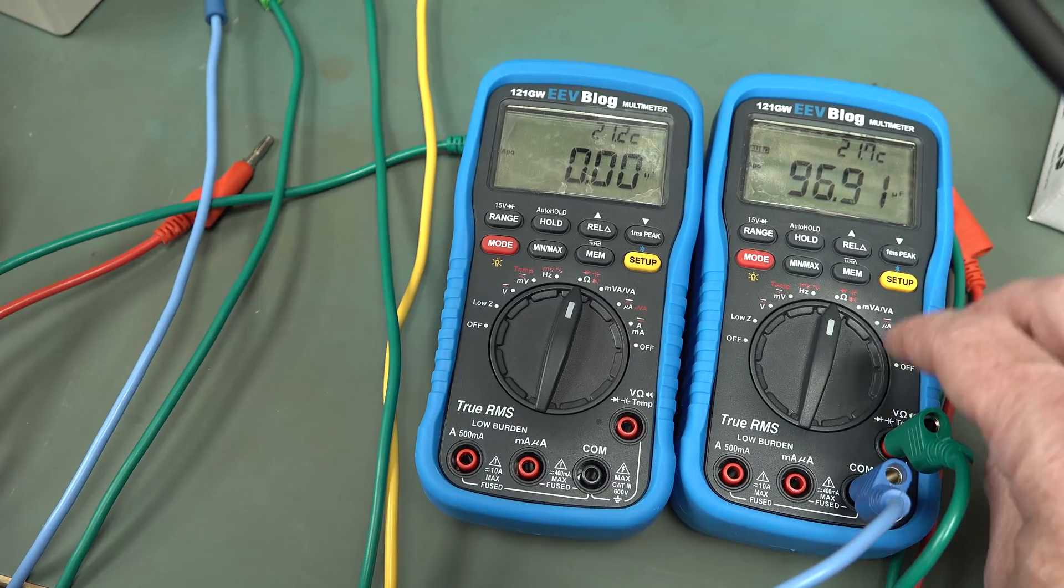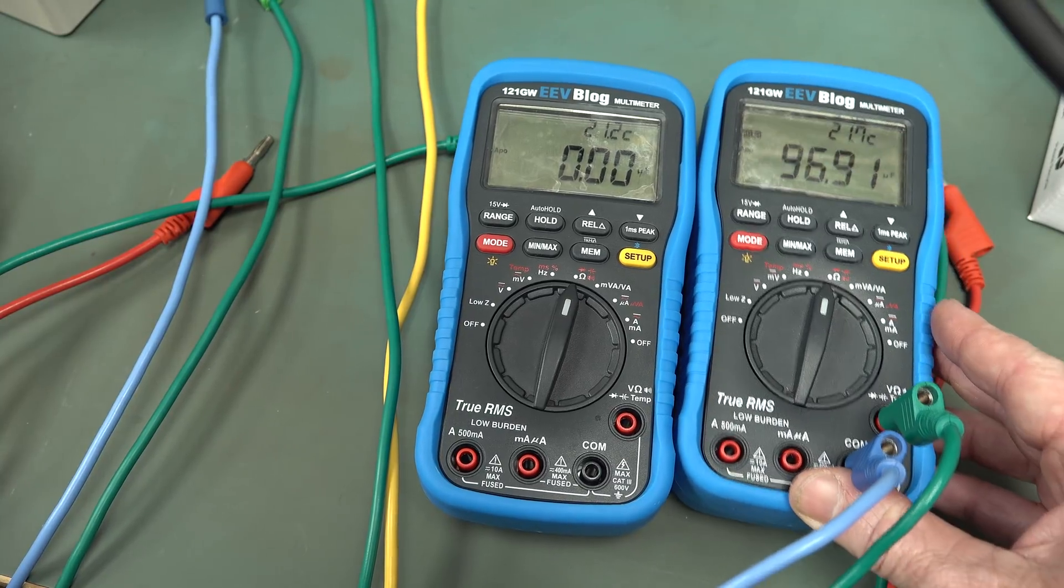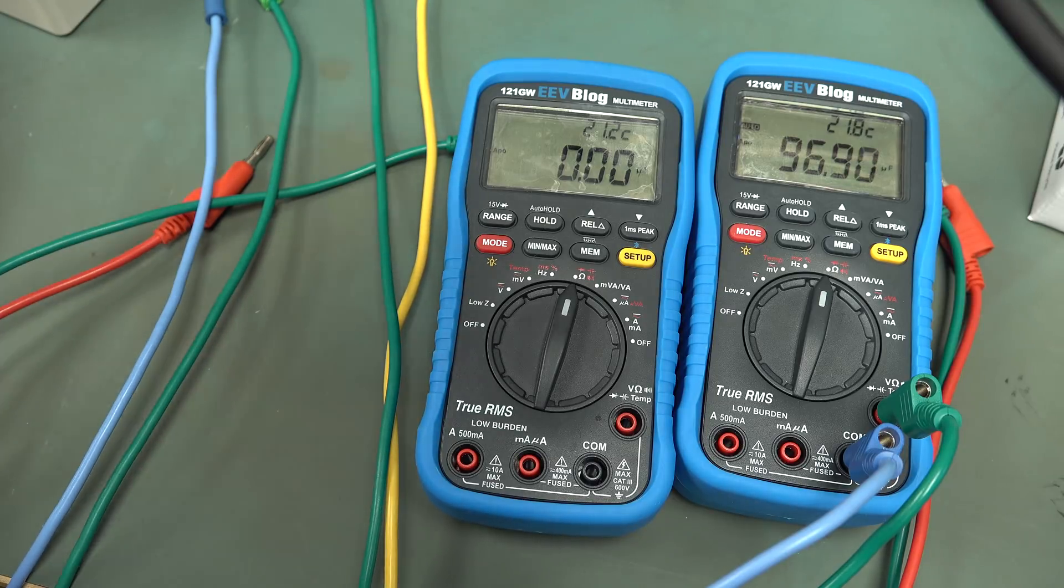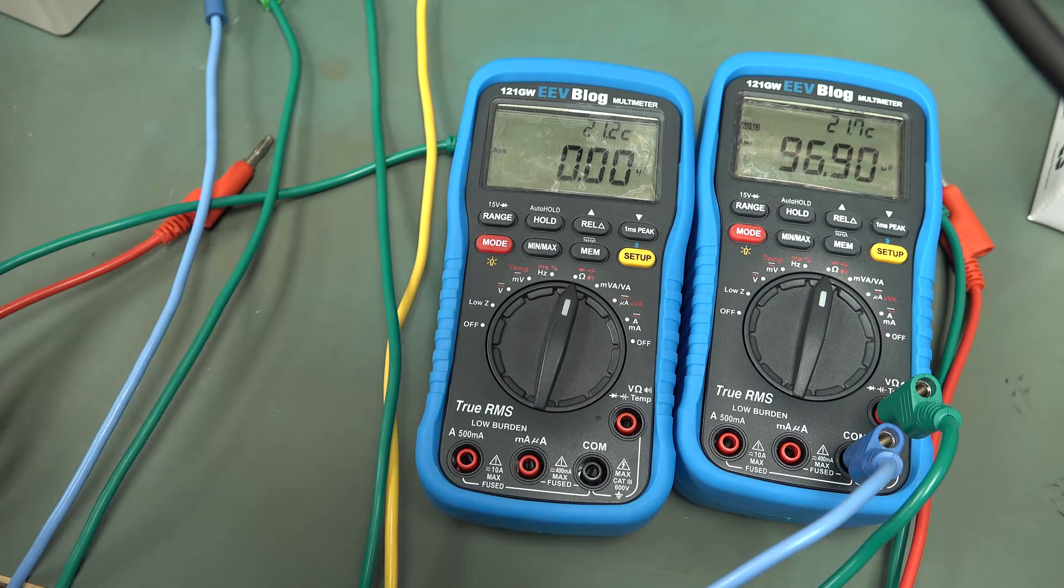Just wanted to show you the new 2.00 firmware. Because that was one of the criticisms of the 121 GW, and rightly so, is that the auto-ranging wasn't that fast in the ohms range. So now it is substantially faster.